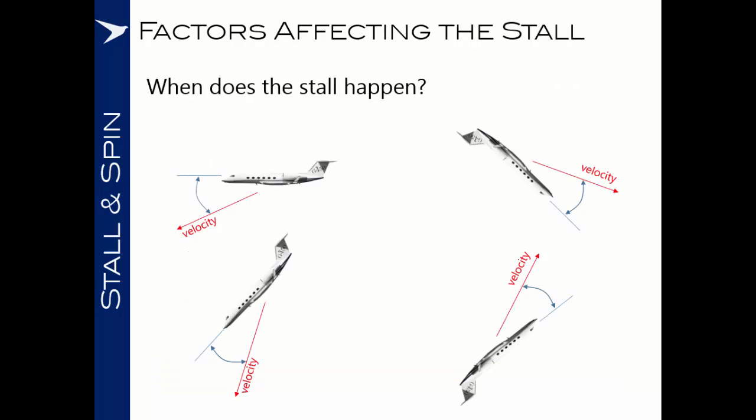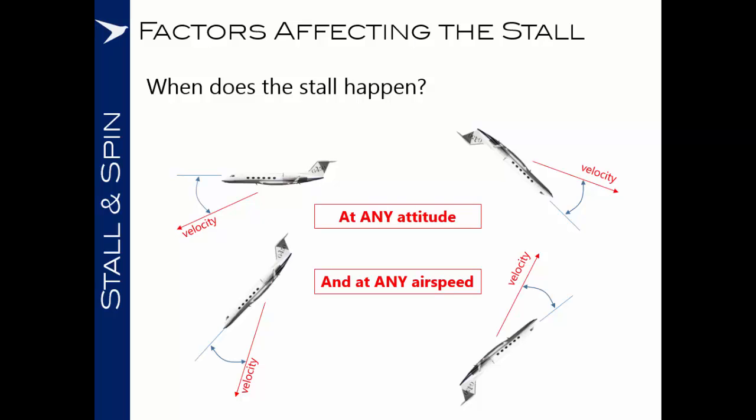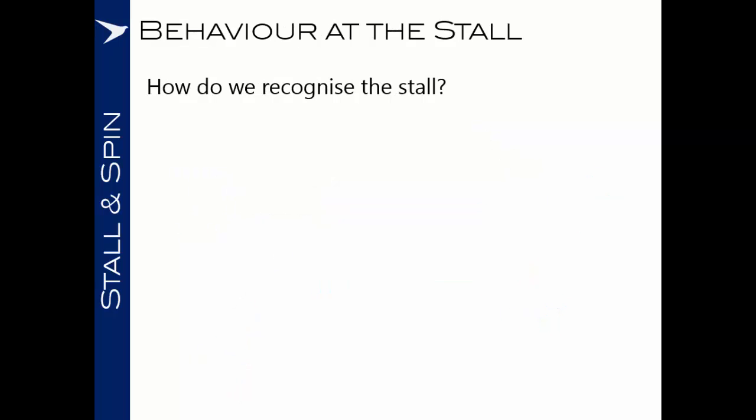In this diagram, every single one of these airplanes has exceeded its critical angle of attack and has stalled. We can say that the stall happens at any attitude and at any airspeed. So how do we recognize the stall? I use the acronym SAVAIRS to help remember the behavior of an aircraft at the stall. Any or all of these factors may indicate that we are facing a stall.